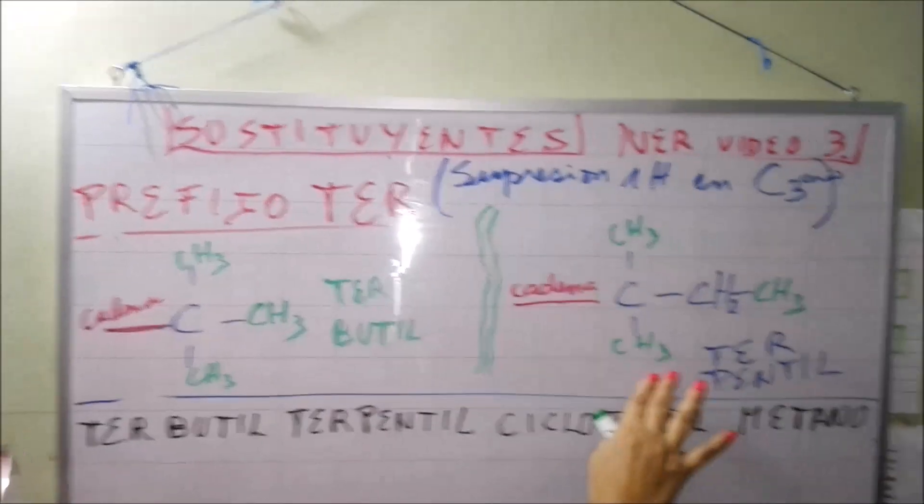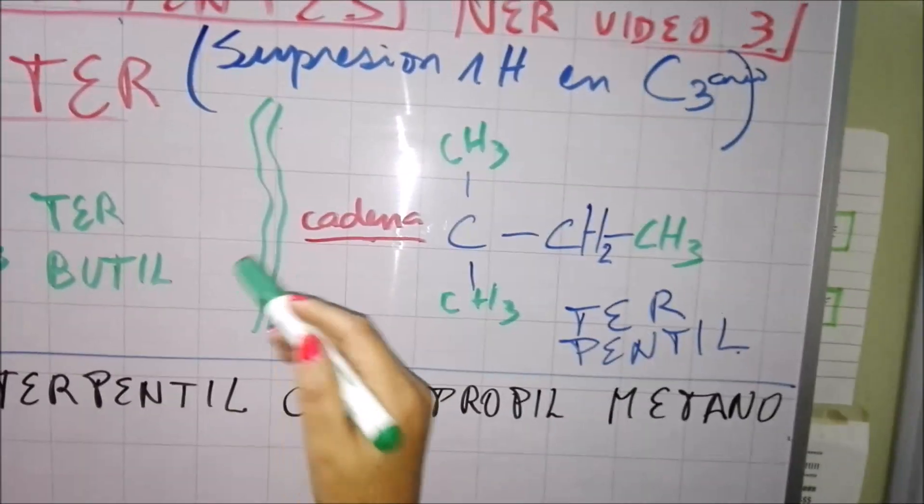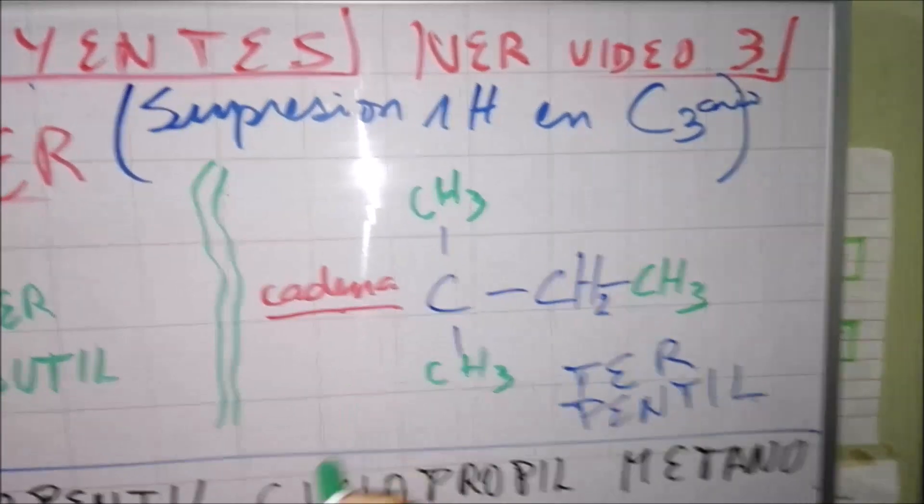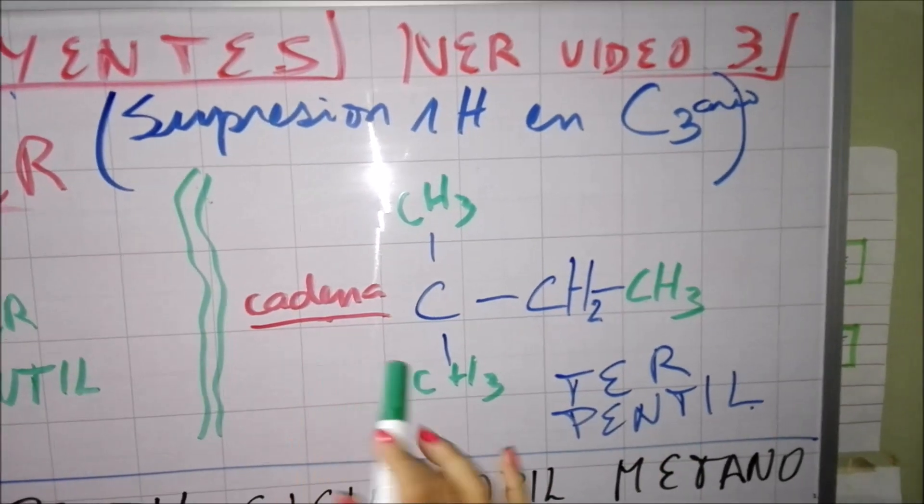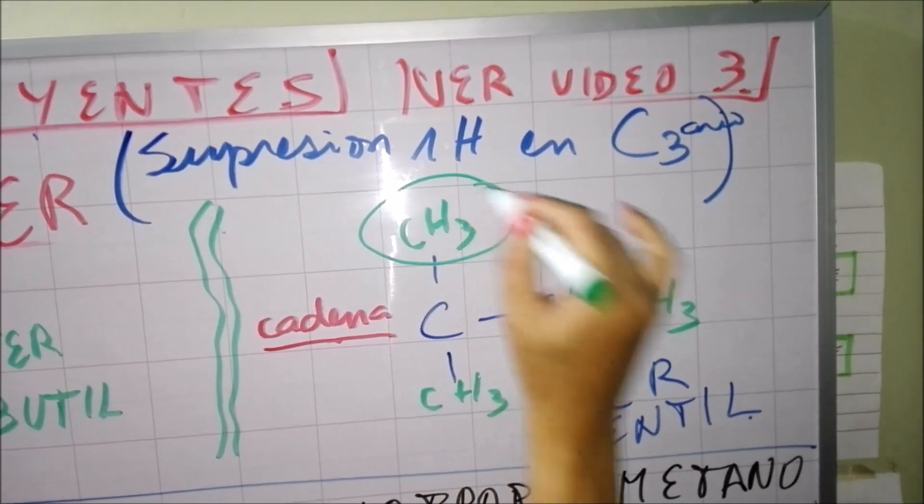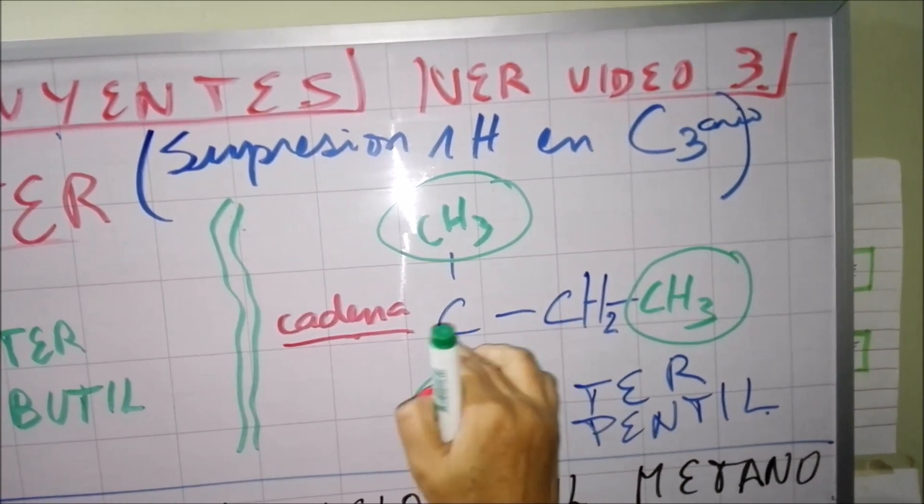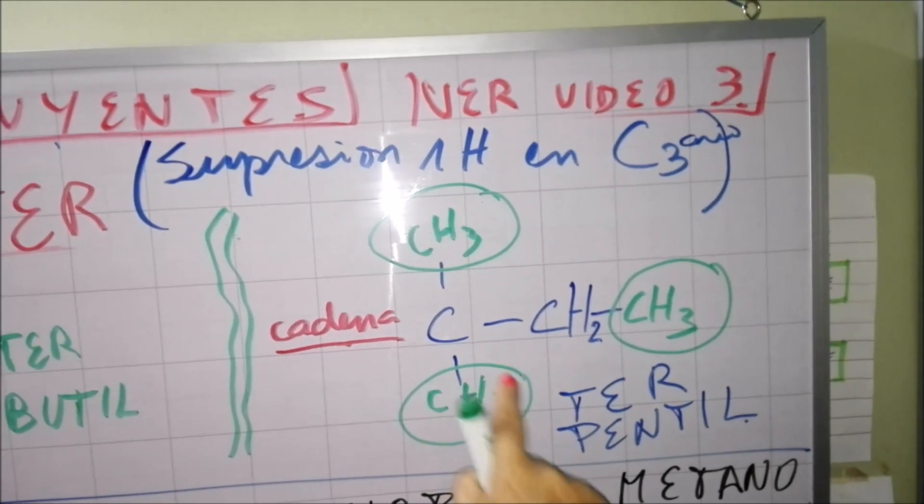En cambio, mira lo que yo tengo aquí escrito. En cambio en terpentil, si yo digo terpentil, podemos decir terpentil, terexil, lo que sea. Miren donde se añaden los carbonos porque siempre al final, siempre vas a tener que terminar con CH3 y donde podrías aumentar es aquí a partir del carbono central.